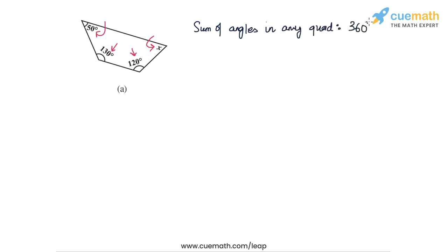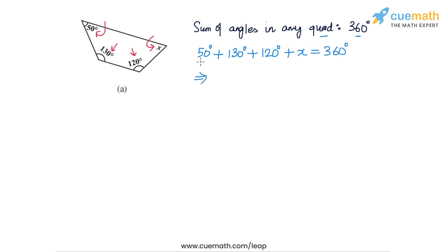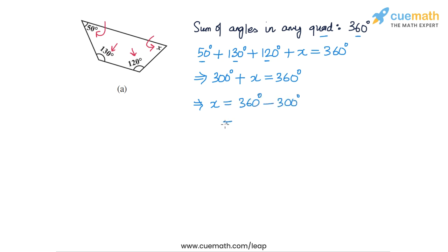We proved this by splitting the quadrilateral into two triangular parts. Using this result directly, the sum of angles in any quadrilateral is 360 degrees, which means 50 degrees plus 130 degrees plus 120 degrees plus the unknown angle x equals 360 degrees. So 50 plus 130 is 180, plus 120 is 300. We get 300 degrees plus x equals 360 degrees, so x equals 60 degrees. The measure of angle x in part a is 60 degrees.